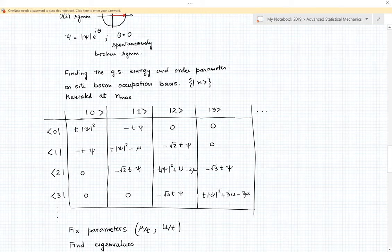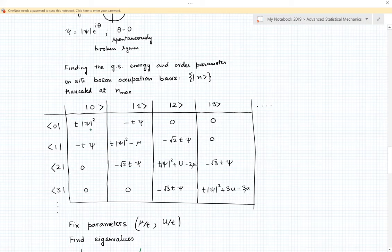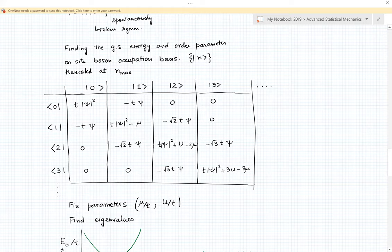This Hamiltonian, you should check, can be written out in this form. The diagonal elements have U and mu and the t psi squared term. The off-diagonal elements contain the hopping minus t times psi. You can see here terms like square root two and square root three, and that comes from the creation and annihilation operators acting on these number states.